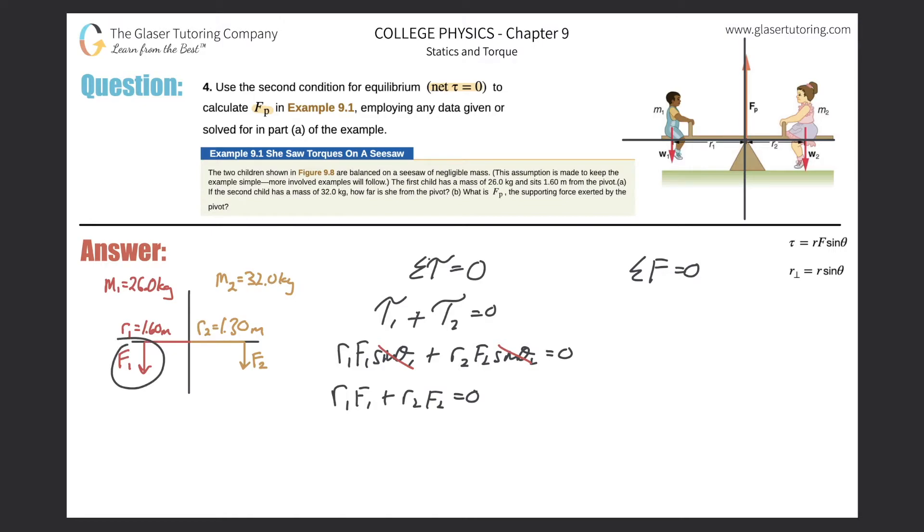There's the force of one child, the force of the second child, and then there is this equilibrium force pointing up. That's F sub P. So I can write them out in my equation that I have F sub P plus F sub one plus F sub two will all equal zero.